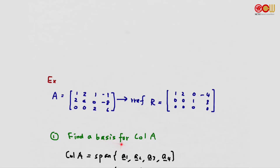Let's find a basis for the column space of A. The column space of A by definition is the span of the column vectors, so we have a generating set. But a basis is a set that is linearly independent and that generates the column space of A.